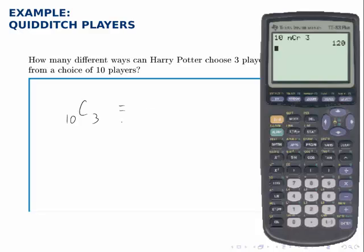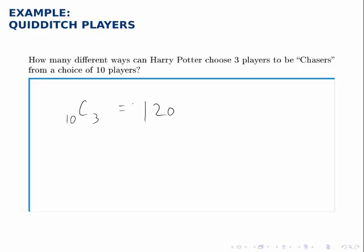So there are 120 total ways that these three people can be chosen from a pool of ten.